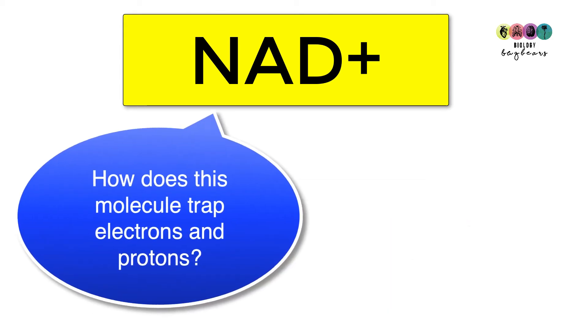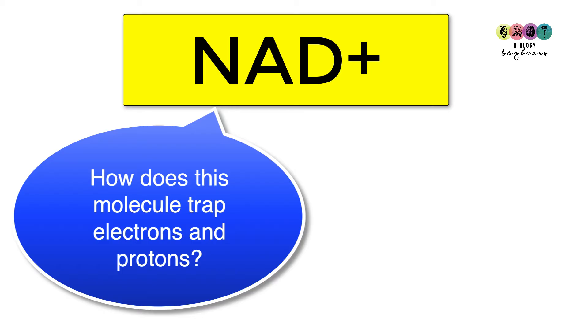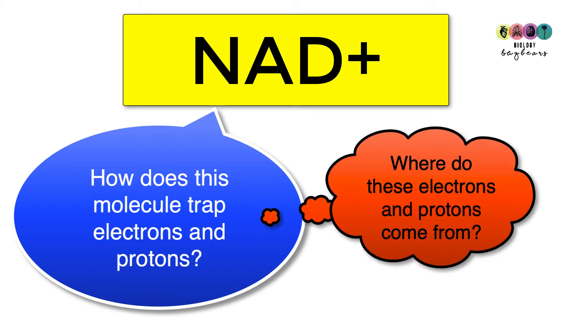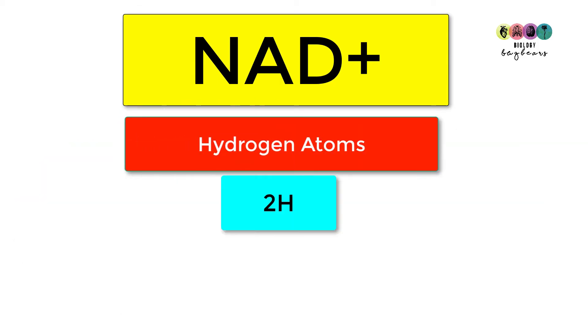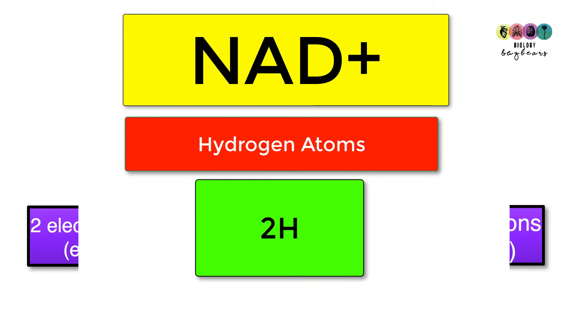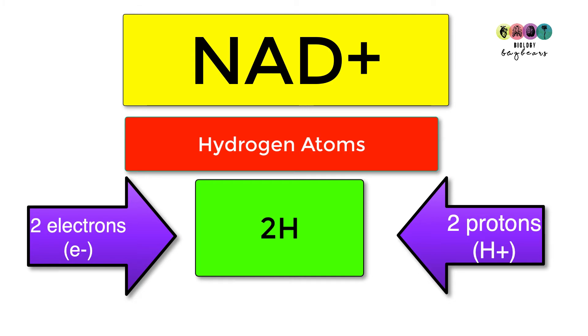It's really important that you know how NAD+ traps the electrons and protons, and where indeed are these electrons and protons coming from. Well, firstly, the electrons and the protons are coming from hydrogen atoms, pairs of hydrogen atoms. And so whenever we consider NAD+ in cellular respiration, we always consider electrons and protons coming from pairs of hydrogen atoms.